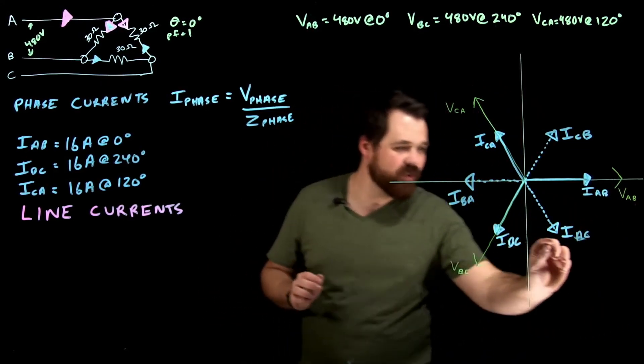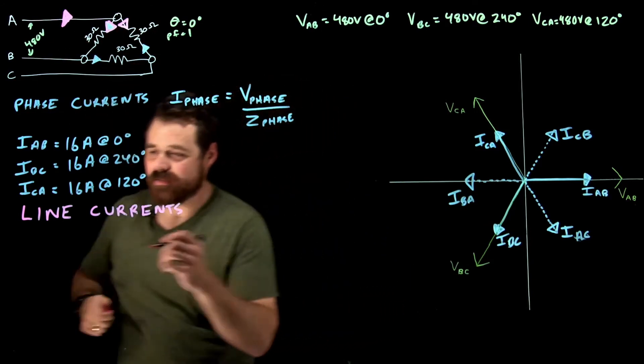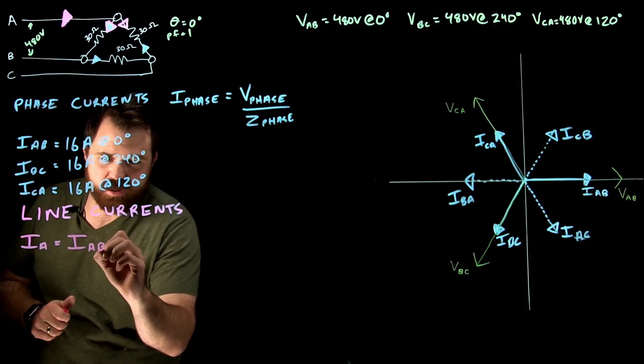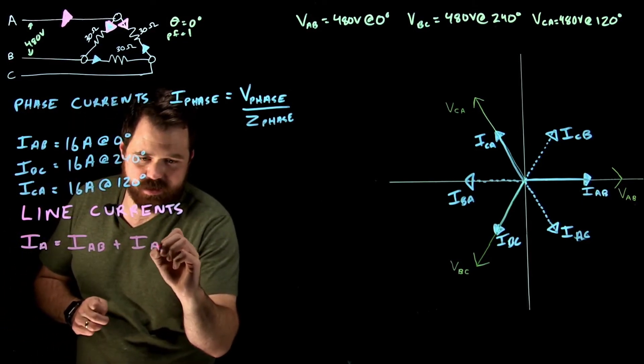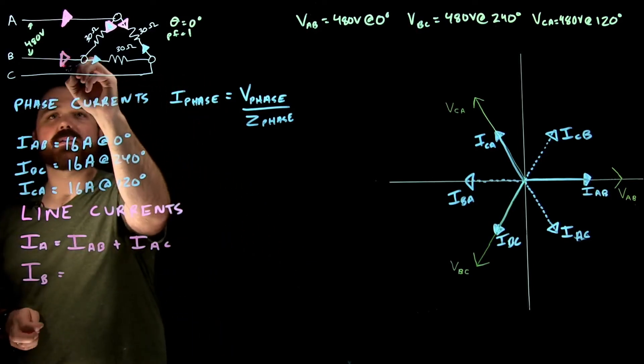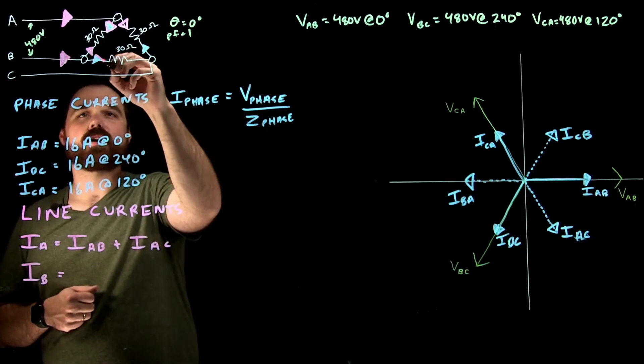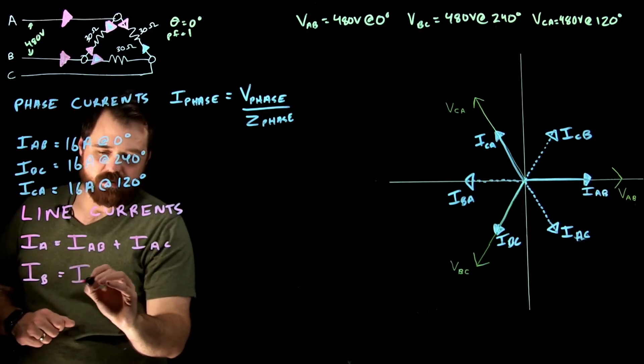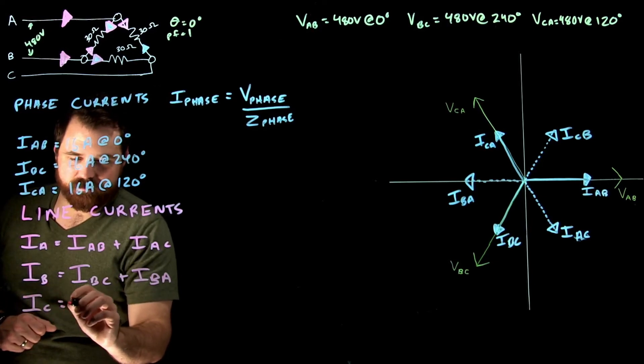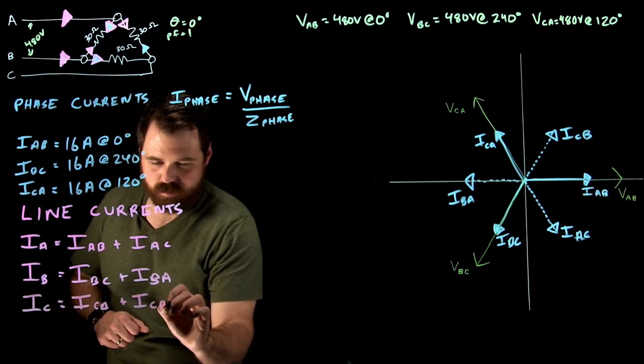These are our inverse ghost or phantom phasors. Now this is really important because we just said I A equals I AB plus I AC. We also know that IB, the current coming here on B is going to equal the current going this way, which would be B to A, as well as the current going this way, which would be B to C. B to C plus IB to A, IC equals I C to A plus IC to B.